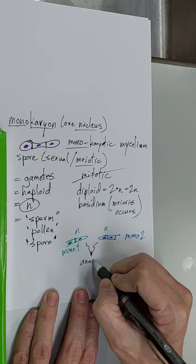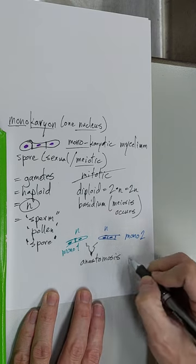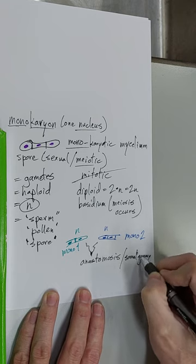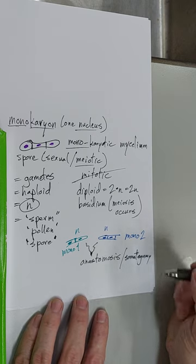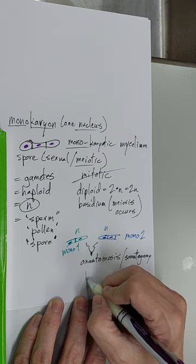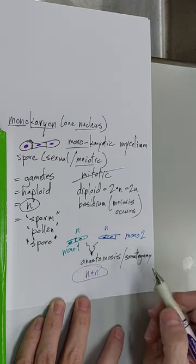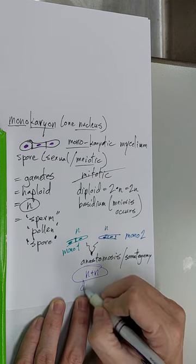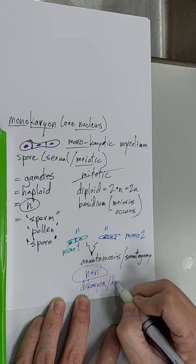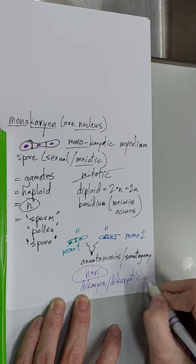So these two guys come together. And so remember this is a mono. You could label that mono 2. And you could say this is mono 1. That's the way I label them. Well, they come together. And they undergo what's called anastomosis and somatogamy. So that's a fancy word there. Anastomosis. And somatogamy. Some people use and they say them different ways. So, somatogamy or whatever. Anyway, what do you end up with? You end up with N plus N. This is what in the fungi we call a dicaryon. Or dicaryotic.